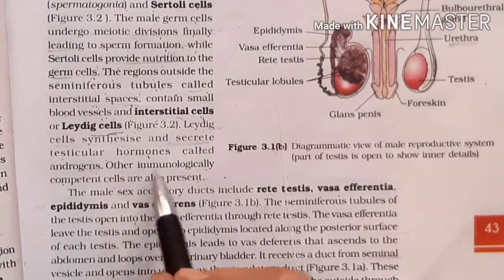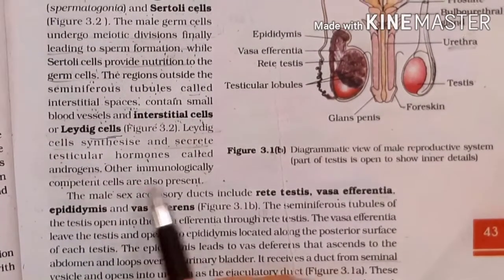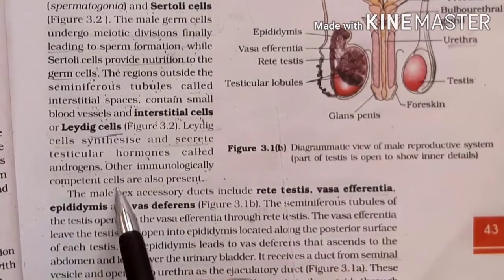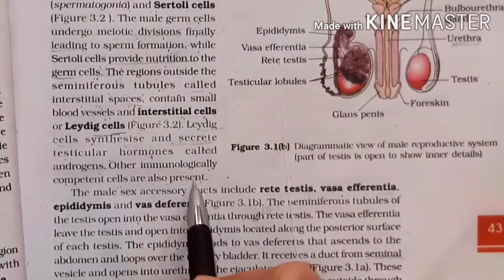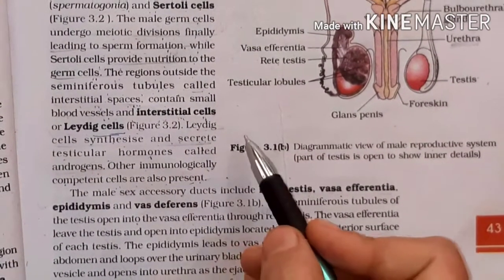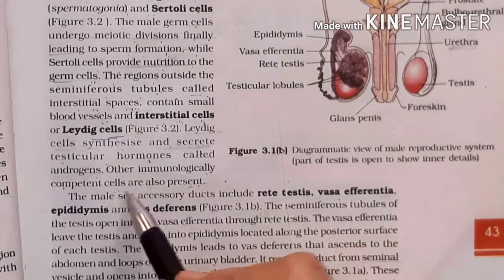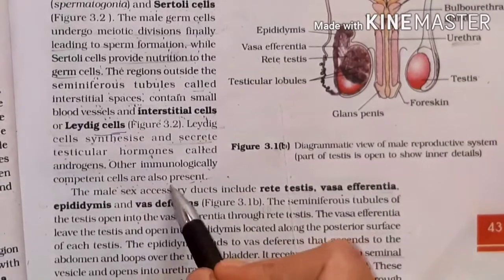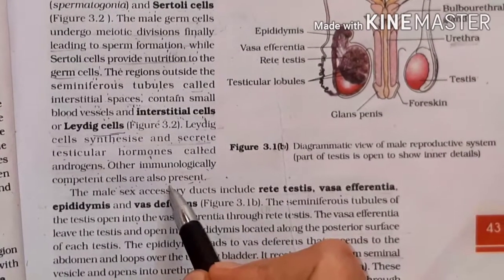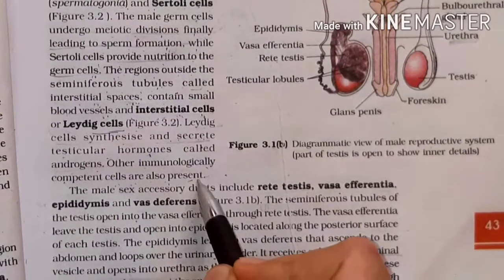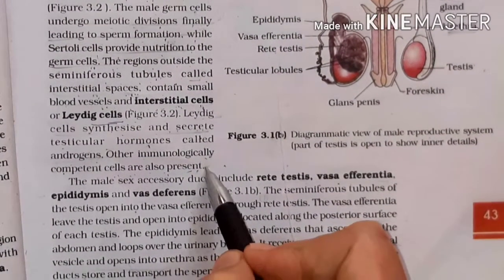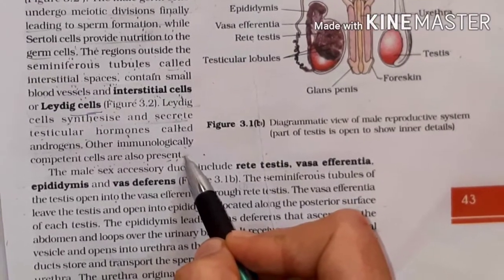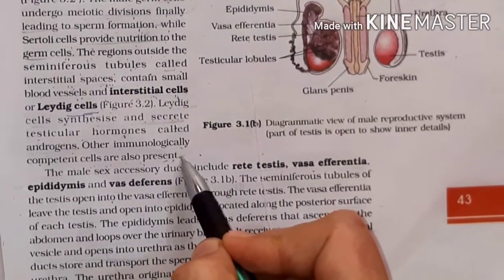Other immunologically competent cells are also present in the interstitial space. That is all for today's topic; the next part will be covered in the next video.